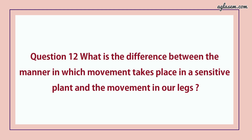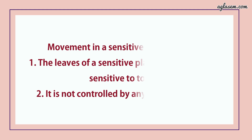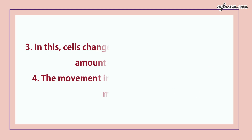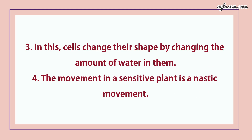Question number 12 says, what is the difference between the manner in which movement takes place in a sensitive plant and movement in our leg? Answer — first, let's talk about movement in a sensitive plant. First point: the leaves of a sensitive plant, like mimosa, are sensitive to touch. Second: it is not controlled by any other part of a plant. Third: cells change their shape by changing the amount of water in them. Fourth: the movement in a sensitive plant is a nastic movement.